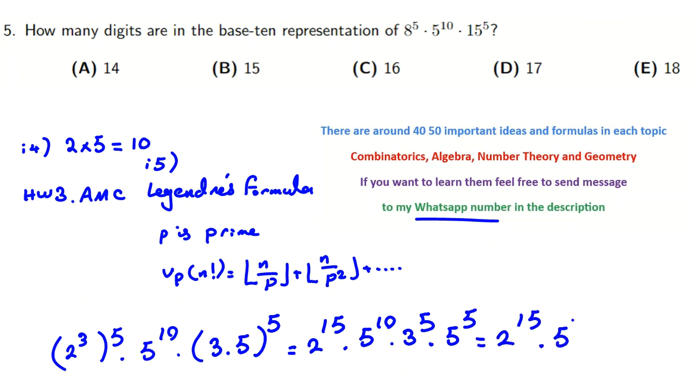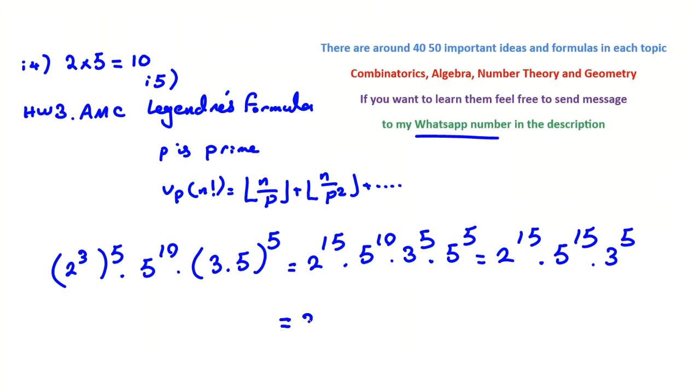So it will be 2 to the 15 times 5 to the 15 times 3 to the 5. This equals 3 to the 5 times 10 to the 15.